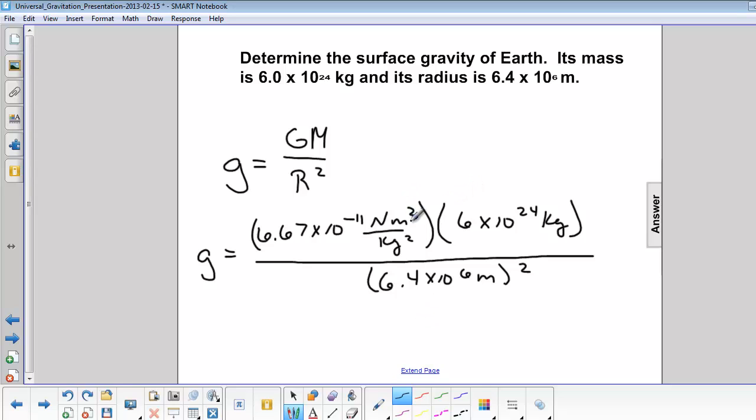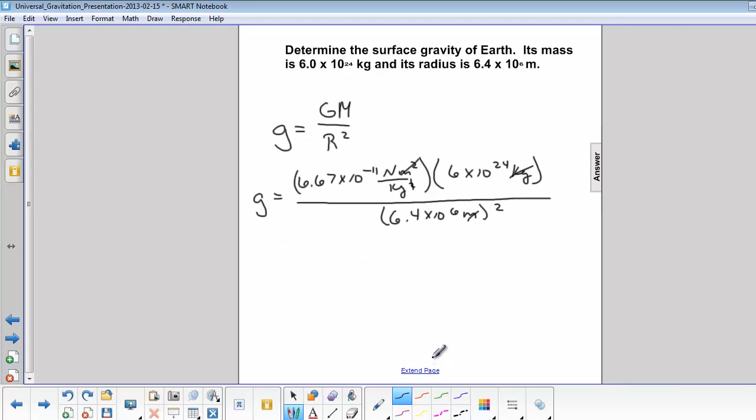Let's cancel out the units that we can. We've got meters squared here and meters squared in the denominator. And we have the kilograms and kilograms squared. So we're left with Newtons over kilograms, which we'll get to in a second.